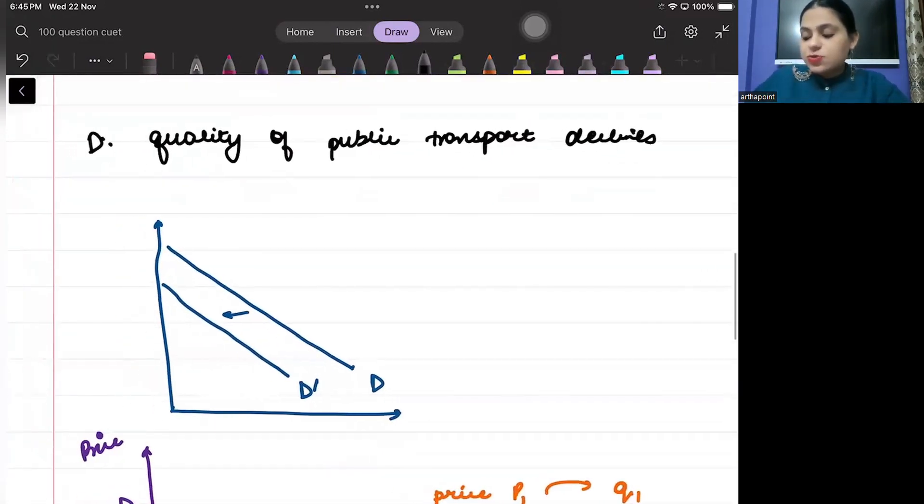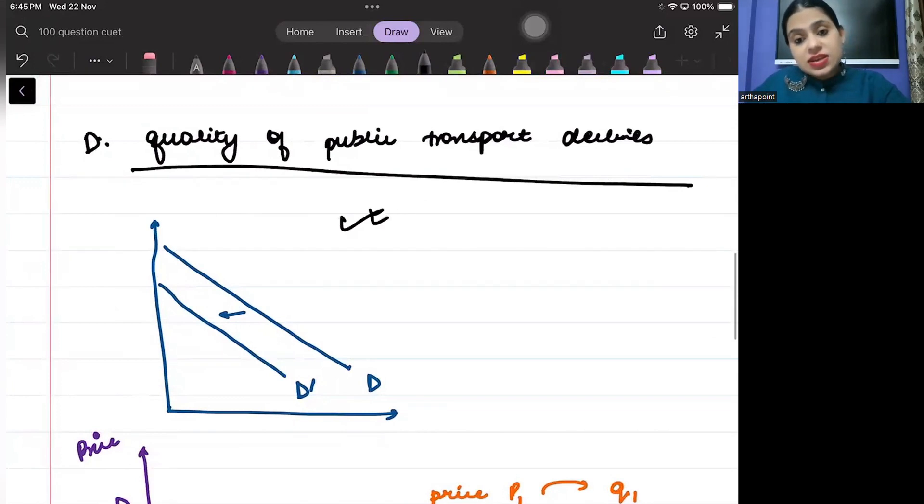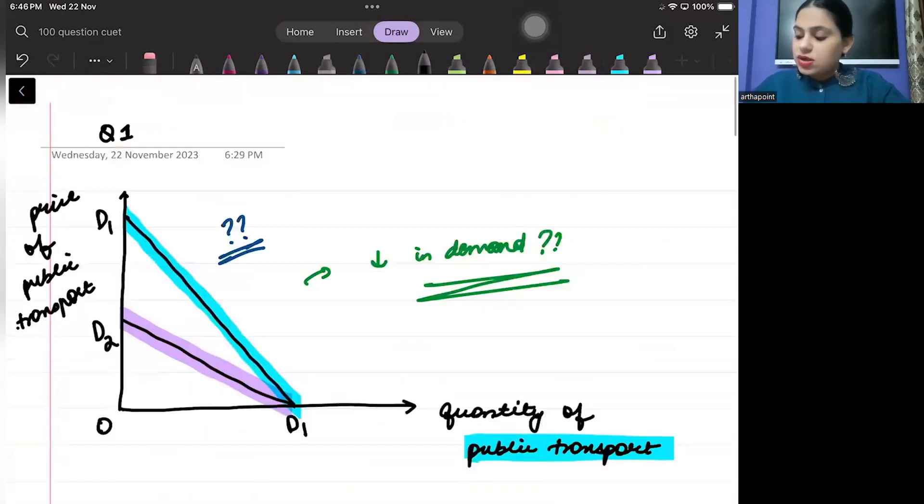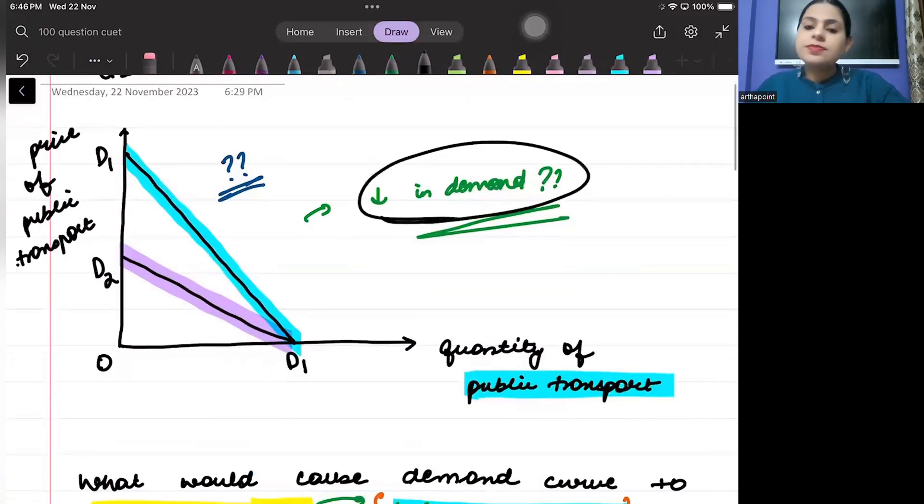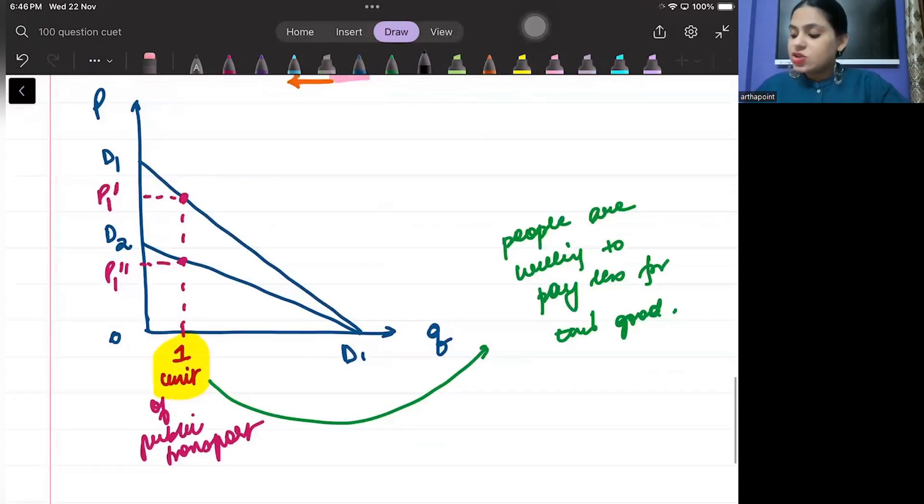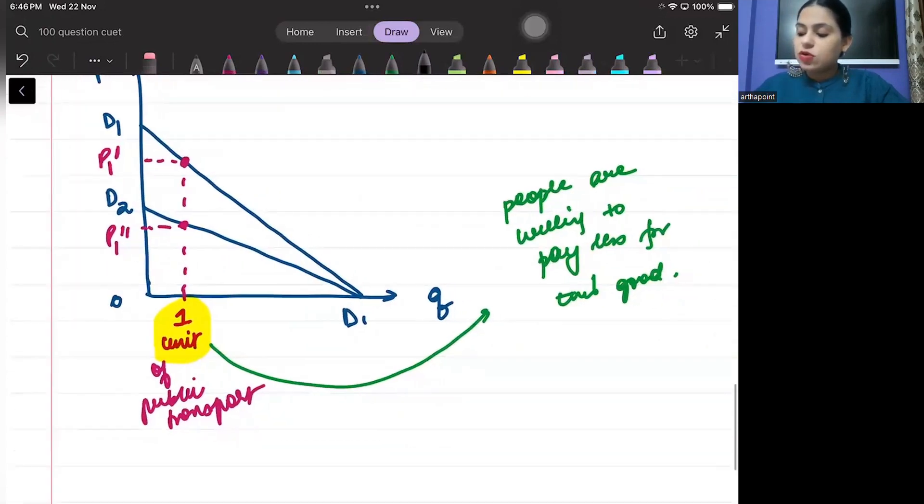Quality of public transport declines. Now, this explains both the reasons that if quality becomes poor, then my demand will fall. And if quality becomes poor, then my willingness to pay for the public transport will also fall.